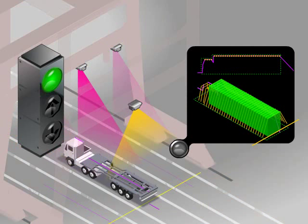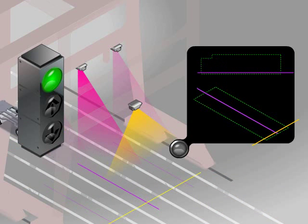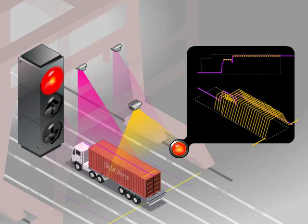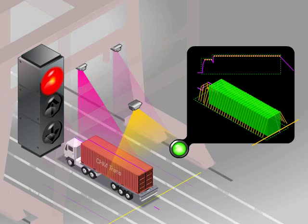If they stop short, the positioning system can notify them that they need to pull forward. Likewise, if the driver pulls forward too far, the system can indicate that repositioning is needed.